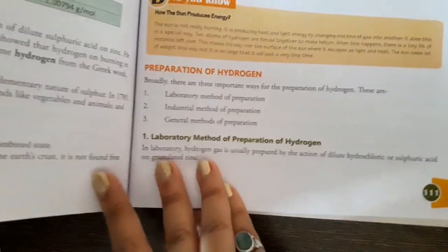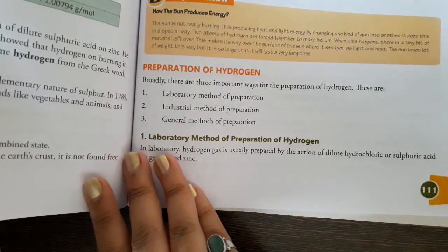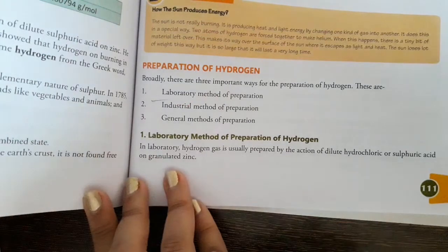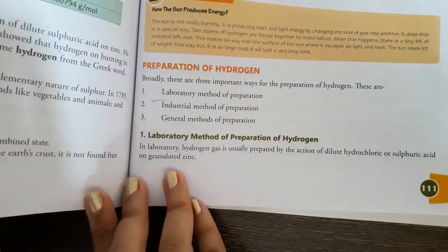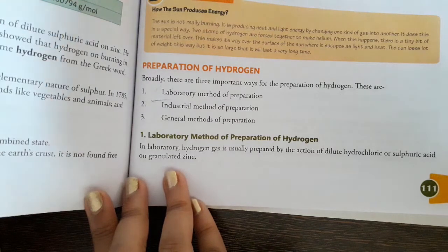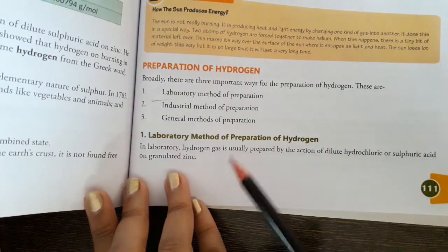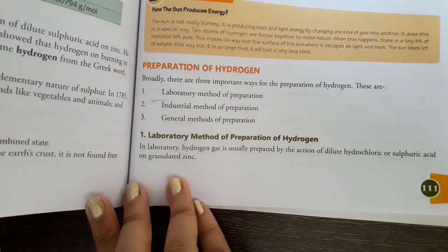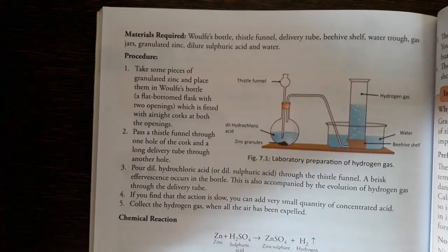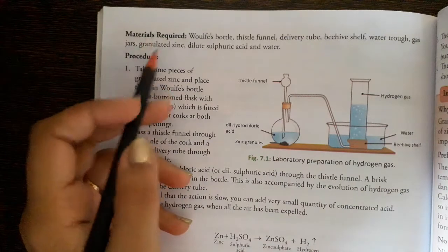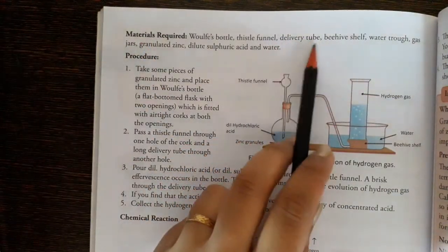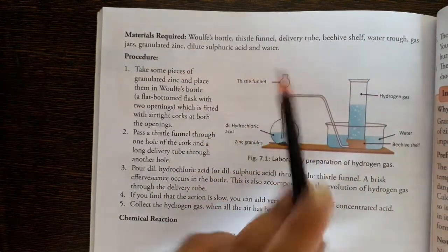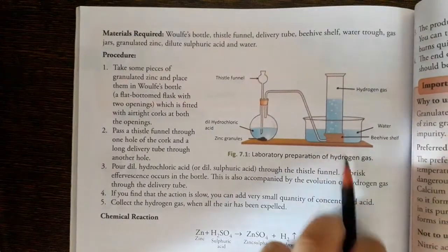Preparation of hydrogen: How can we prepare hydrogen? We can prepare it by laboratory method, industrial method, and general method of preparation. First we discuss laboratory method. In laboratory, to prepare hydrogen we need HCl, sulfuric acid, and granulated zinc. Three components are required to prepare hydrogen in laboratory. Materials required: bottle, thistle funnel, delivery tube, beehive shelf, water trough, gas jar, granulated zinc, dilute sulfuric acid, and water.